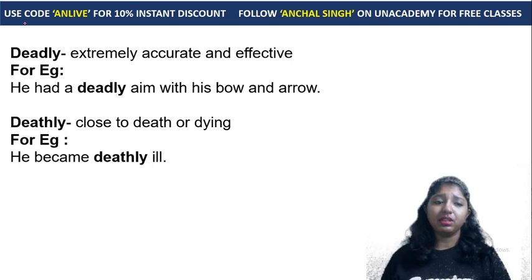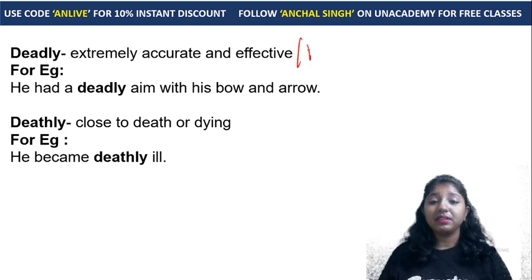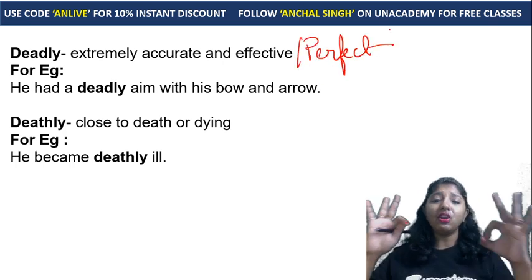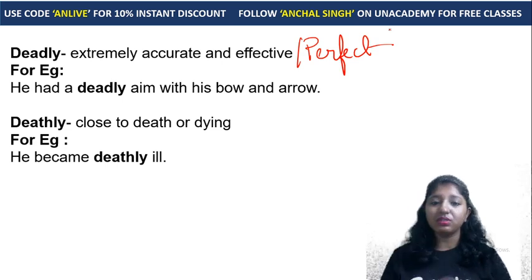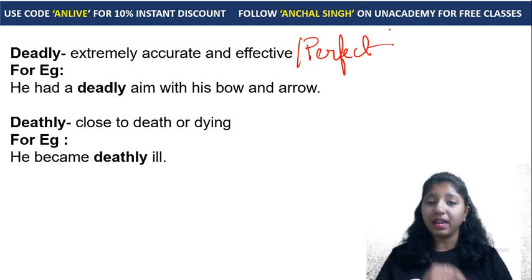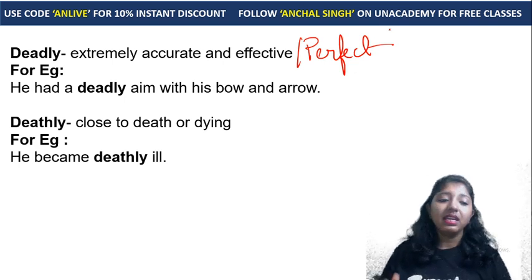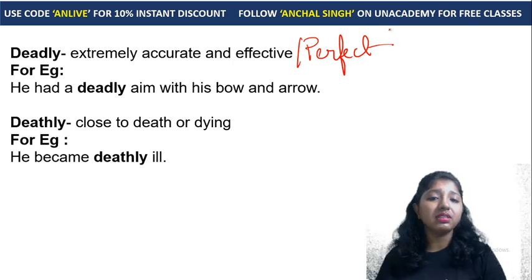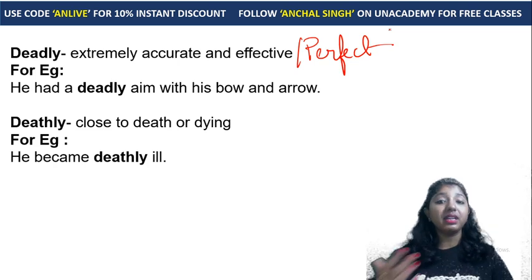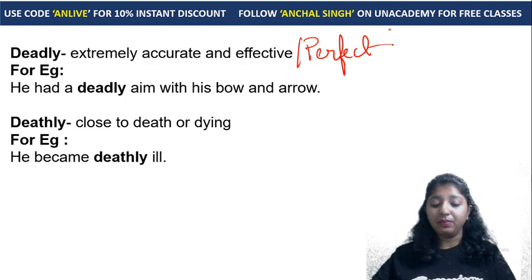Deadly and deathly — deadly means excessively accurate and effective, or perfect. For example: 'He had a deadly aim with his bow and arrow' — his aim was perfectly deadly. Deathly means close to death or dying. For example: 'He became deathly ill' — he became so ill that he almost reached his deathbed. So deadly means perfect or lethal accuracy, while deathly means near death.